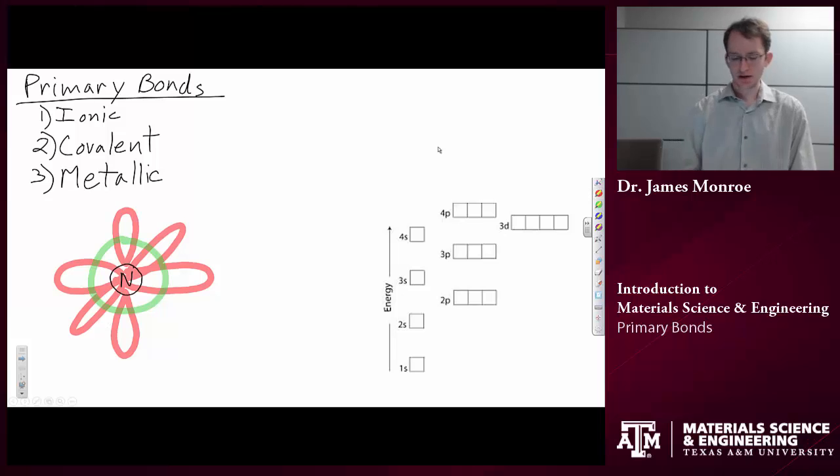Each one of these subshells has two electrons associated with it. This S shell can have spin up, spin down. This P shell can have two electrons up and down, this P shell up and down, and this P shell up and down.